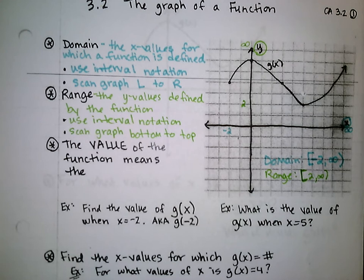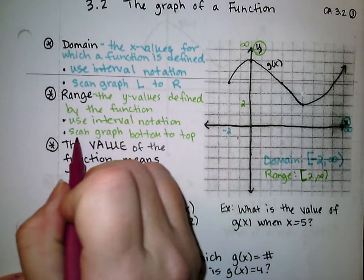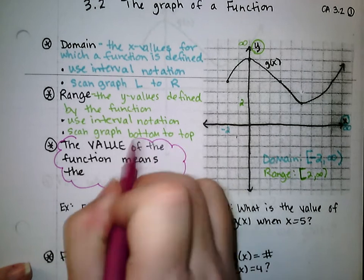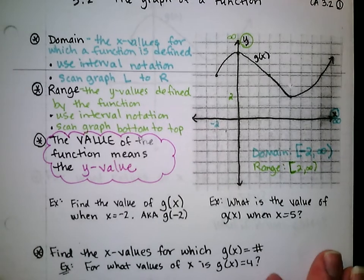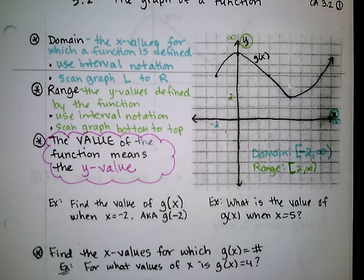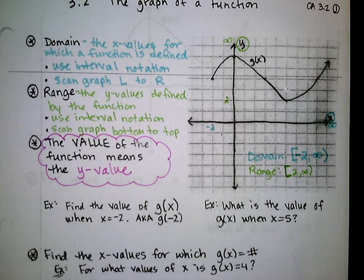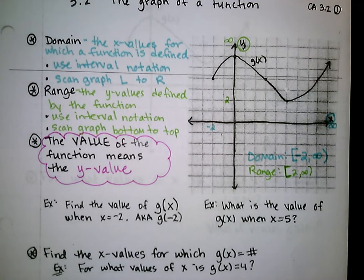When we talk about the value of a function, this is really important. The value of a function means the function's y value at any point. So if I ask you what is the value of the function, I'm asking you for a y value. Each ordered pair on this graph has two coordinates, an x and a y. Everywhere on here we can think of x, y or x, g of x — because function notation means the same thing as y. So g of x means y, and every ordered pair has that format.